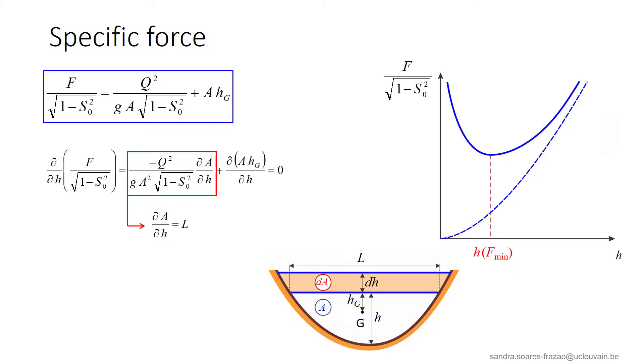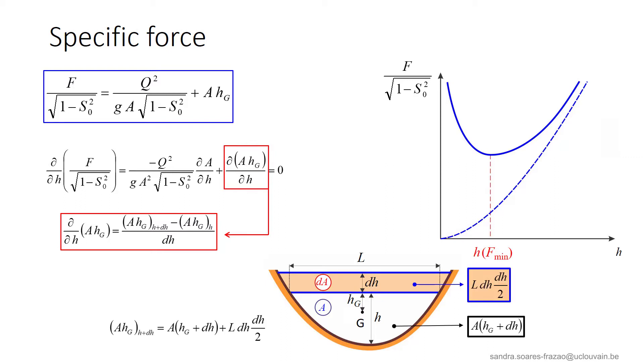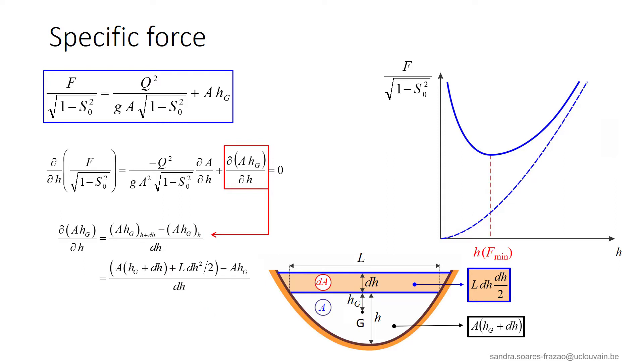In this first term, we know that dA/dH is equal to L, which is the width of the cross section at the free surface. Then, the second term can be calculated as the difference of static moment between two sections with a depth difference of delta H, assuming that the area dA can be considered as a rectangle of area L dH. So, the term highlighted in red here can be developed like this. And neglecting the small terms of the second order, we finally see that the derivative of the static moment is simply the wetted area A.